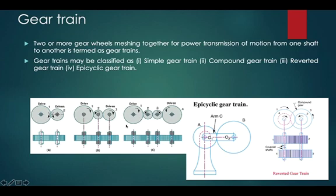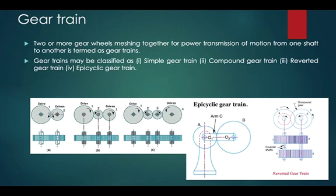In a compound gear train, the gears are arranged in series with at least one shaft carrying two or more gears mounted on it. Some intermediate shafts, other than the driver and driven shafts, carry more than one gear. Compound gear trains are used for high velocity ratios with comparatively less distance between the driver and driven shafts.